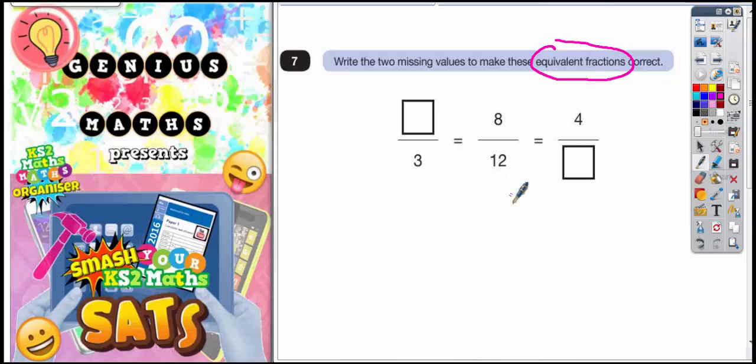Now when you do equivalent fractions, it's all about finding connections between numbers, the two top numbers or the two bottom numbers. So let me explain what I'm trying to say. How do you get from this 8 to this 4? Well you halve it, you divide by 2. So if you're halving the 8 to get to the 4,